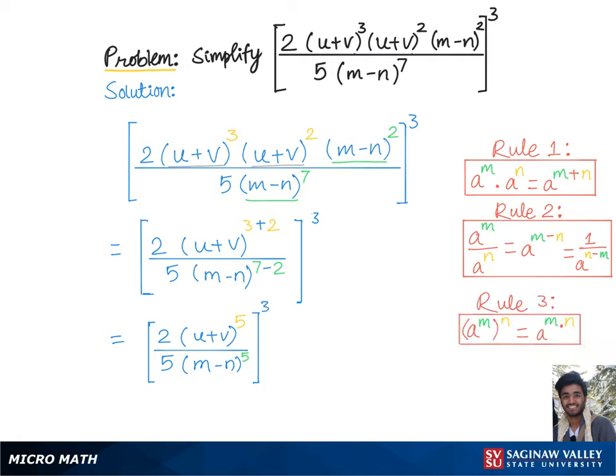According to which we'll basically multiply the exponents. That is 2, which can also be written as 2 to the first power, times 3, multiplied by u plus v to the 5 times 3.